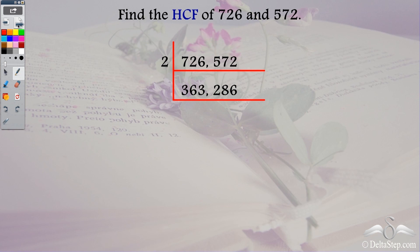We need to check both the numbers whether they are divisible by 2 or not. I see that 363 is an odd number. So this is not divisible by 2. So I move on to the next prime number which is 3. Using the divisibility rules, 363 is divisible by 3 but 286 is not divisible by 3.